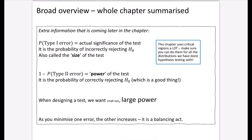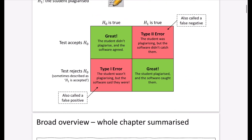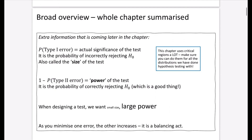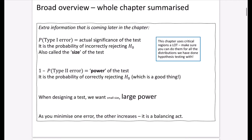We've talked about the type 2 error. If we look at 1 minus the probability of a type 2 error, this is called the power of the test, and it's the probability of correctly rejecting H0. Because the type 2 error is when you've accepted H0 but the alternative was actually true — doing 1 minus that gives the probability of correctly rejecting H0. This is a good thing. When you design a test, you want a small size, because size is the probability of incorrectly rejecting H0, and you want a large power, because power is the probability of correctly rejecting H0.